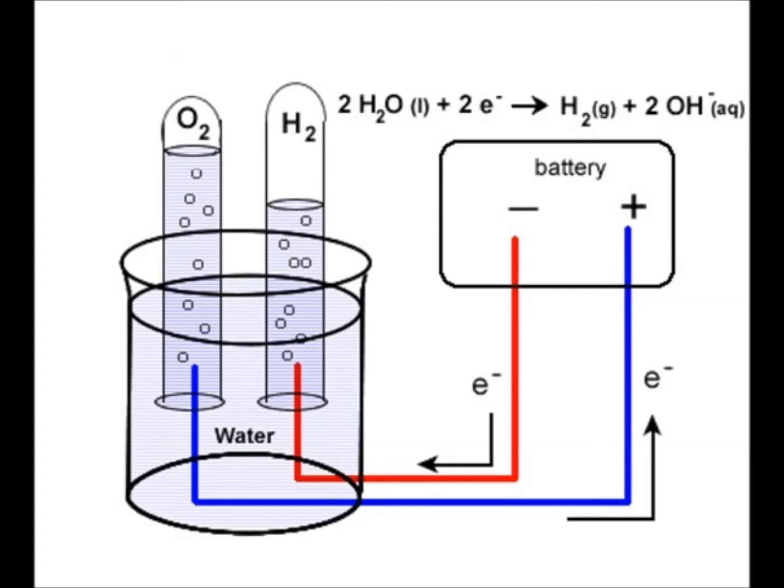The reaction happening on the cathode is written at the right side on the top of the screen. Electrons combine with water to generate hydrogen, so the cathode must be negatively charged.